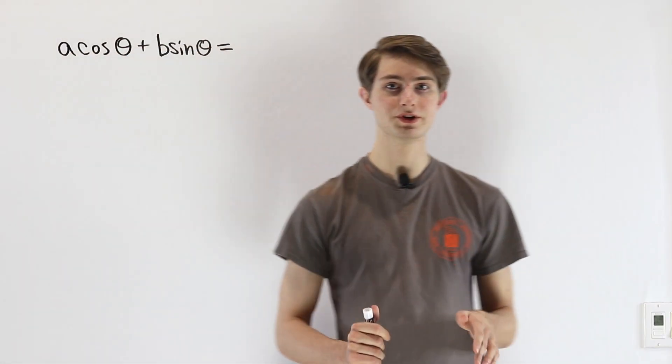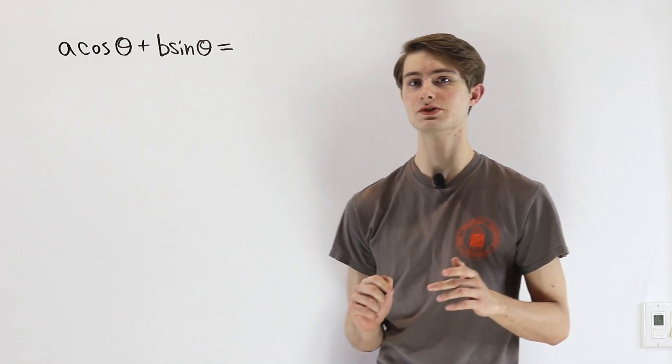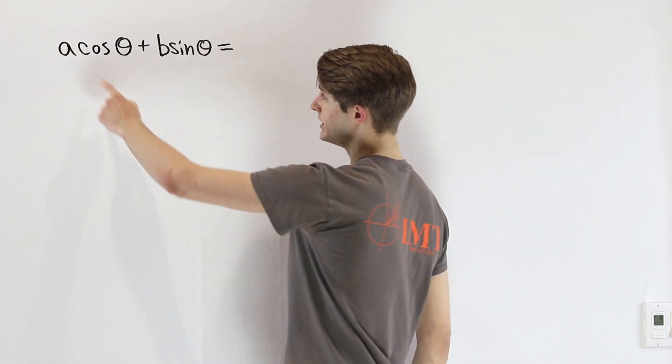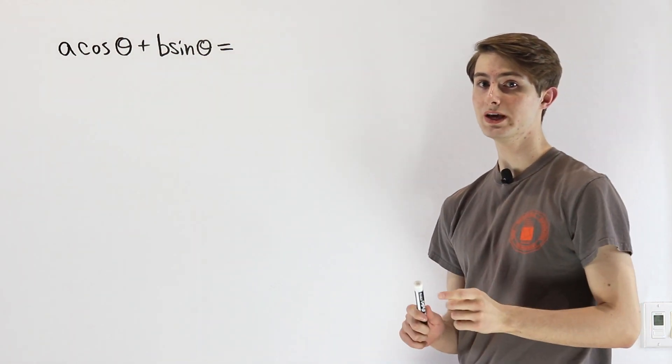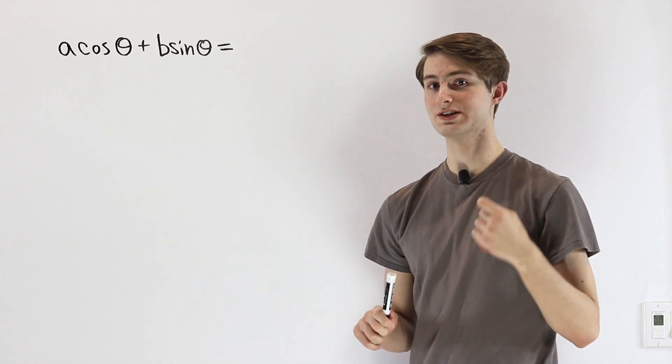We are going to do a derivation of the harmonic addition theorem for cosines and sines using vectors. When we look at the expression A cos θ + B sin θ, one of the ways we can visualize this expression is in terms of a dot product.